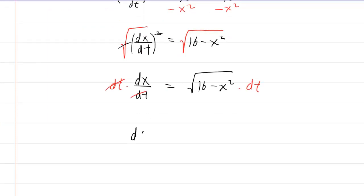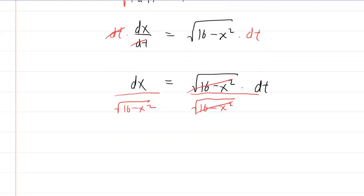We now have dx is equal to the square root of 16 minus x squared dt. And then finally, to move the x terms to the left-hand side completely, we will divide both sides of the equation by the square root of 16 minus x squared so that they cancel out on the right-hand side. So now we've rewritten the differential equation by separating the variables.